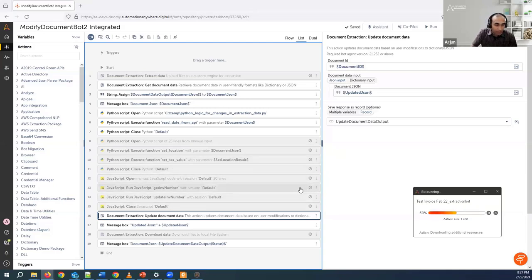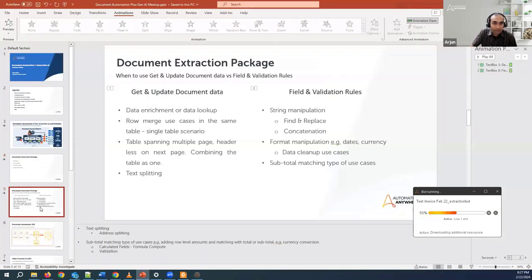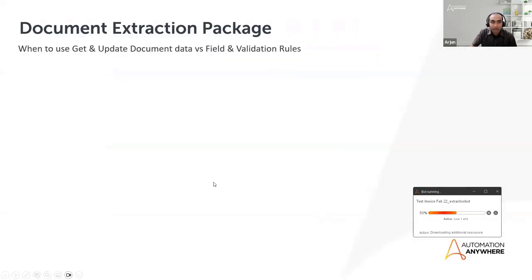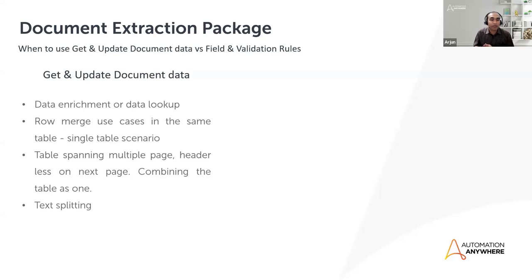While this bot is running, let me take you to a slide that shows the differences between why you would want to choose one option over the other. We spoke about different options to modify data — field and validation rules, and also get and update document data. As much as possible, if it's easy enough for you to do, always do it using field rules. But if you want to extend the capability beyond what field rules can do, that's when you come to get and update document data.